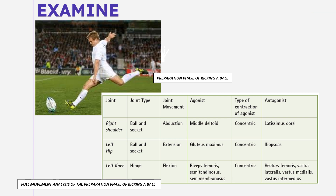For the antagonist muscles: the antagonist of the middle deltoid is the latissimus dorsi. The antagonist of the gluteus maximus is the iliopsoas. For the biceps femoris, the antagonists are the rectus femoris, vastus lateralis, vastus medialis, and vastus intermedius. These are anatomical terms, and again, they are all provided in your module.